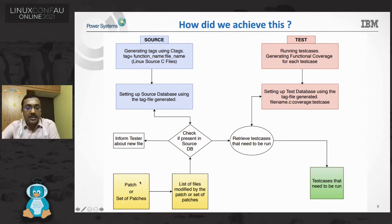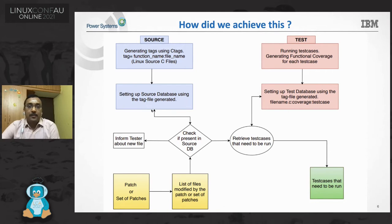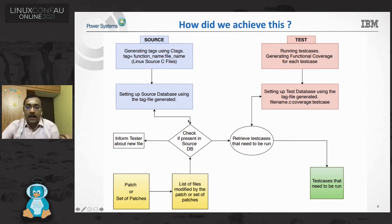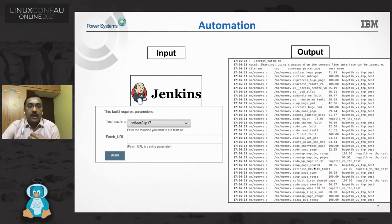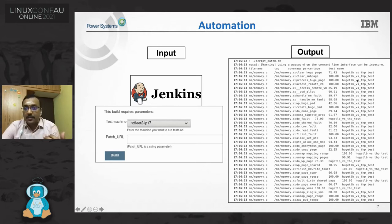Then we pass the patch or patch set. From here, we extract the file names which are modified or added using the patch. Then we check whether these files are present in the source database or not. This is important because we need to inform the testers about new files — when a file from the patch set is not available in the database, that means it is a new file, and the tester will be informed about the addition and can prepare test cases for it. For existing files, we query the database, retrieve the test cases that need to be run, and give them as output. The whole method is automated using Jenkins — simply pass the patch URL to the job and we get output as what test cases need to be run.